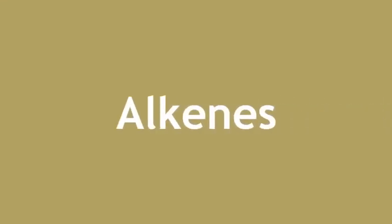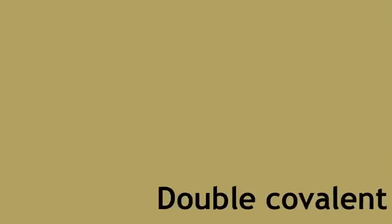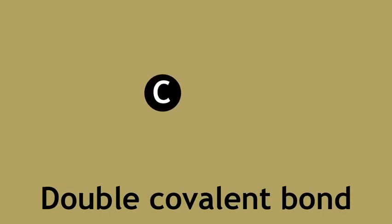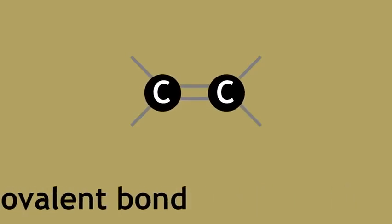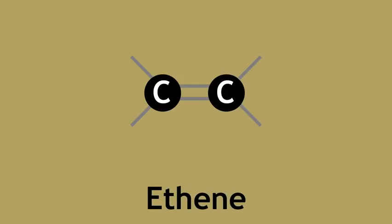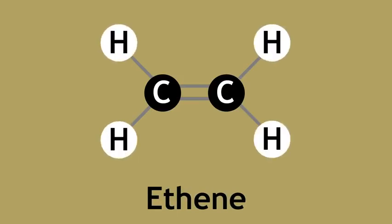The next series is called the alkenes. These are hydrocarbons that contain a double covalent bond between two carbon atoms in the molecule. Just like the alkanes, each carbon atom still needs four bonds but has two bonds already due to the double covalent bond with the other carbon atoms. The ethene molecule is completed by two more bonds with two hydrogen atoms for each of the carbon atoms.